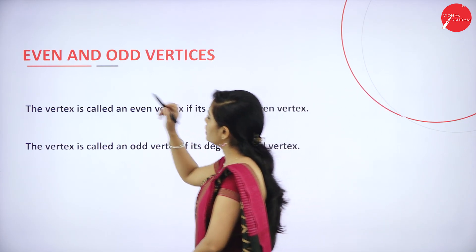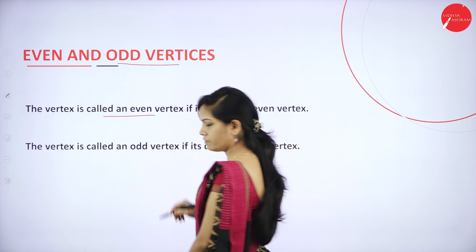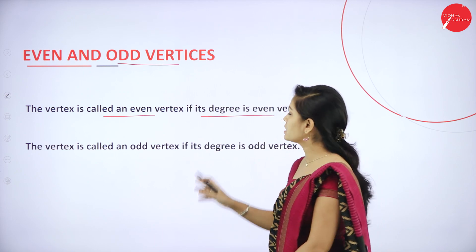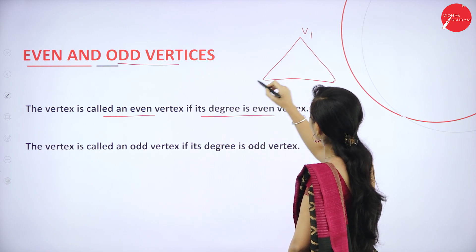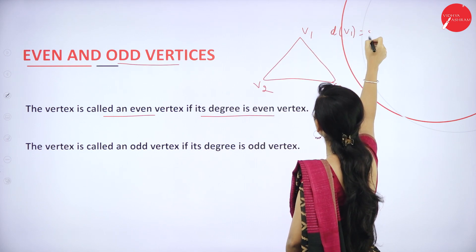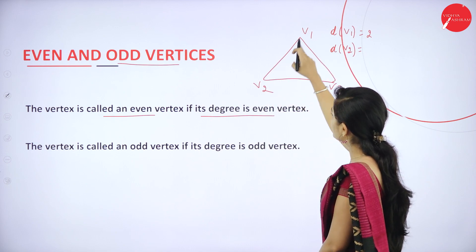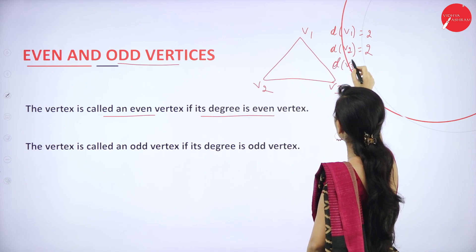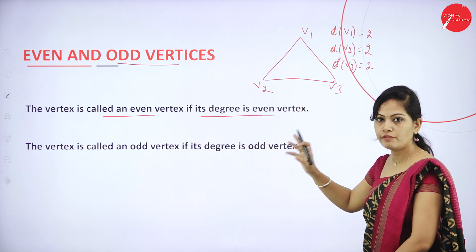Next we have even and odd vertices. A vertex is called an even vertex if its degree is even. For example, in a graph with V1, V2, and V3 — D(V1)=2 (connected to V2 and V3), D(V2)=2 (connected to V1 and V3), and D(V3)=2. Since the degree of each vertex is even, each is called an even vertex.